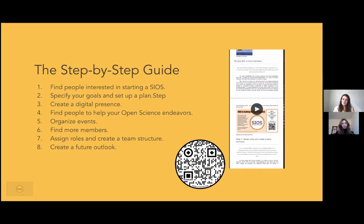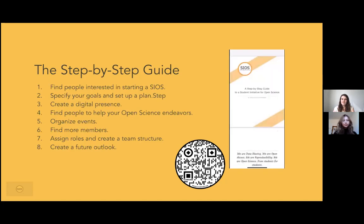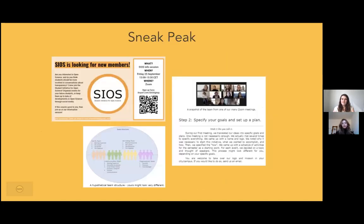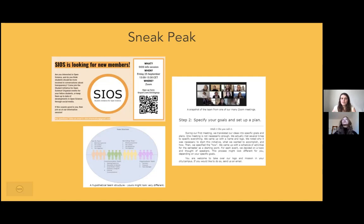Here is a QR code — if you want to get access to the step-by-step guide, you can go to our OSF page where we published it. This is a sneak peek: in the upper left corner you can see how we usually recruit new members, and in the lower section you can see a hypothetical team structure. This guide is really not a book of rules — it should be more of an inspiration for you to start your own initiative. On the right, the steps have a little explanation as well.